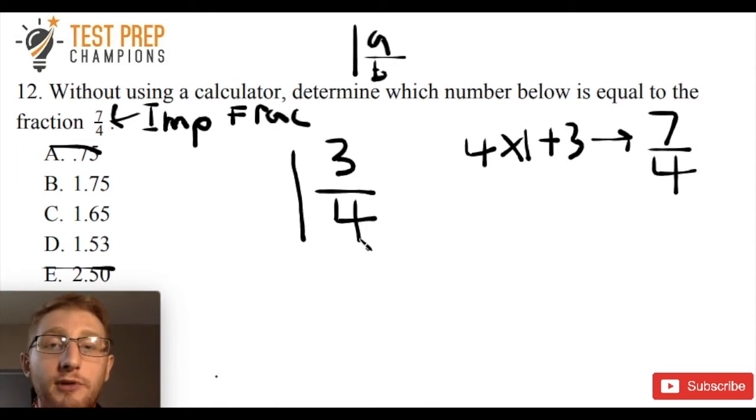And the way to think about that is quarters. So just remember that whenever you see this 4 down here in the denominator, think about quarters. If you've got 1 quarter, you've got 25 cents. If you've got 2 quarters, you've got 50 cents. If you've got 3 quarters, you've got 75 cents. And if you've got 4 quarters, you've got a dollar. So hopefully that makes sense.